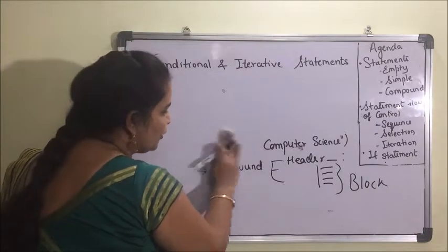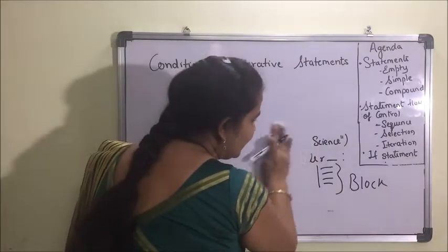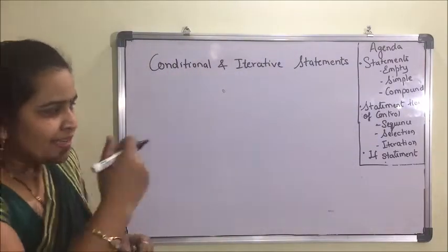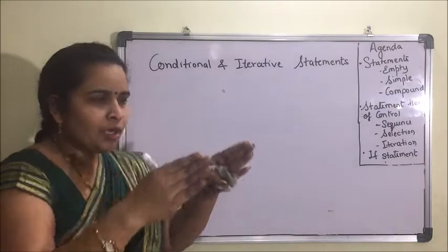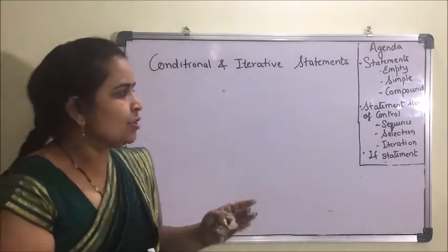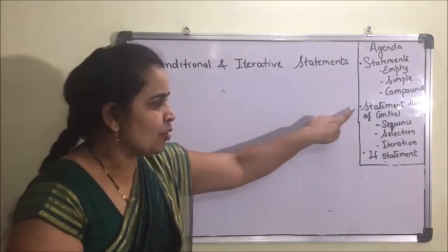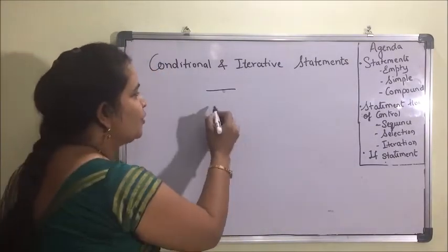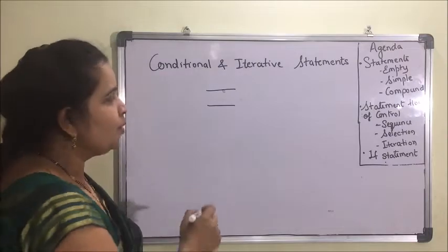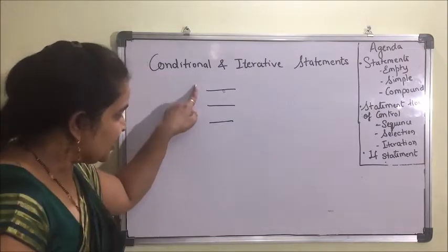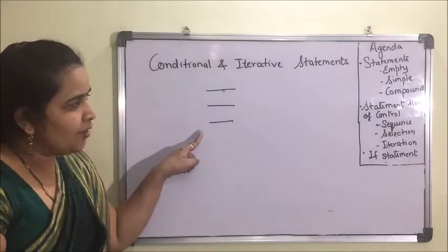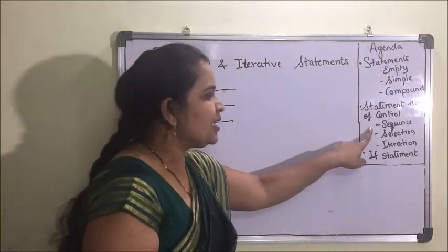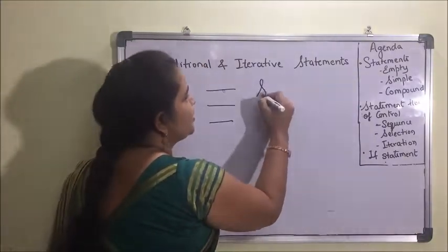Statement flow control refers to the fashion in which a program is executed — the way the interpreter moves through statements. When statements are executed one by one, line after line, this is known as sequence statement flow, or simply sequence.